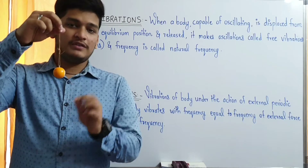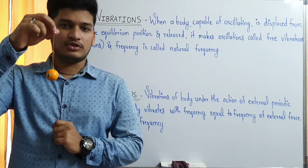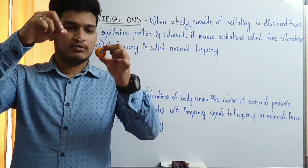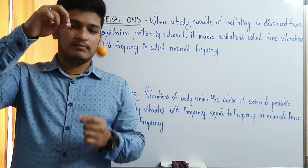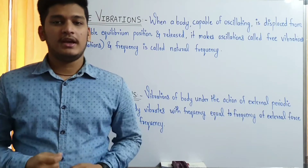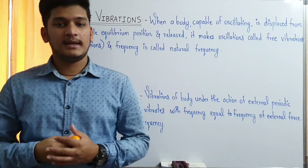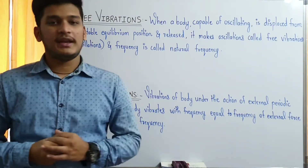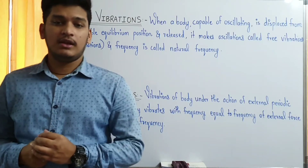Let us consider a pendulum — this is a body which is capable of oscillating. If we displace it from its equilibrium position and release it, the pendulum is now performing oscillations. These oscillations are called free oscillations, and the frequency at which this pendulum oscillates is called its natural frequency.